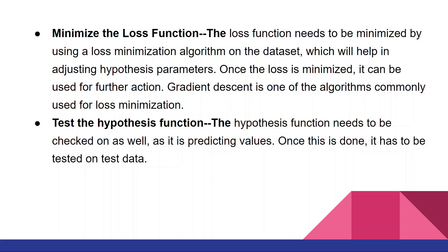The next step is to minimize the loss function. The loss function needs to be minimized by using a loss minimization algorithm on the data set, which will help in adjusting hypothesis parameters. Once the loss is minimized, it can be used for further action. Gradient descent is one of the algorithms commonly used for loss minimization.